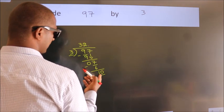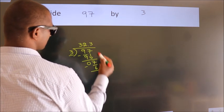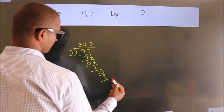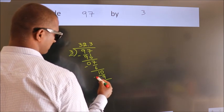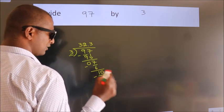A number close to 10 in 3 table is 3 times 3 is 9. Now we subtract. We get 1. Now you observe.